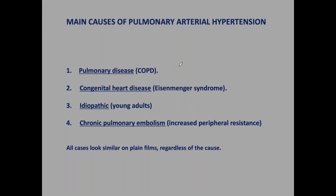There are many causes of pulmonary arterial hypertension. By far the most common is secondary to pulmonary disease — chronic obstructive bronchopulmonary disease is the most common one, but any diffuse lung disease may end up with pulmonary arterial hypertension. Second, we have congenital heart disease, which is called Eisenmenger syndrome — a reversal of a left-to-right shunt.